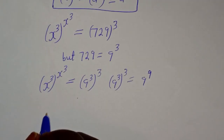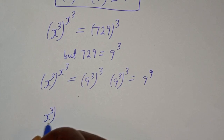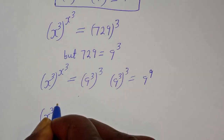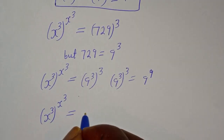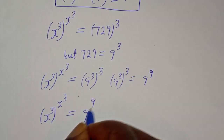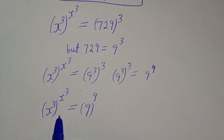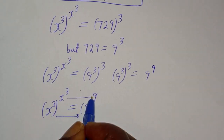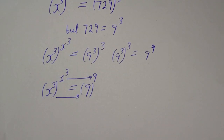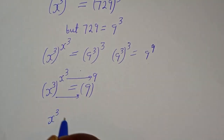So we have s raised to the power of s raised to the power of 3, equal to 9 raised to the power of 9. By comparing, we can see that the base is equal to 9 and the exponent is equal to 9. Therefore, s raised to power 3 is equal to 9.